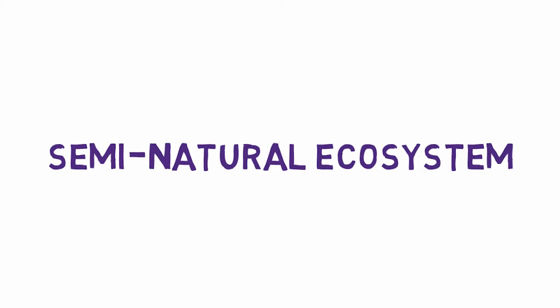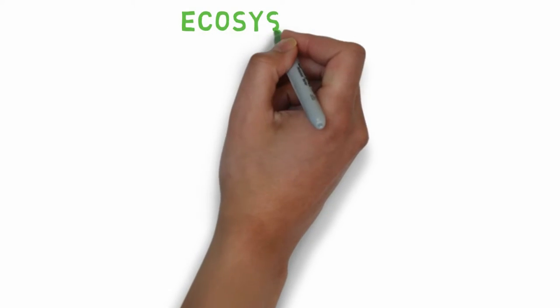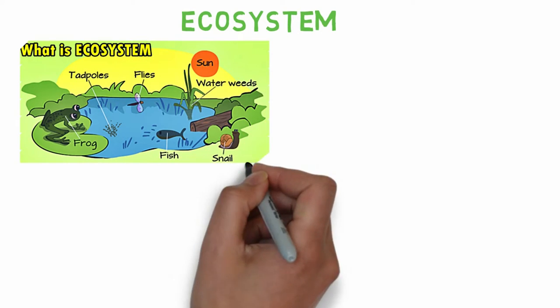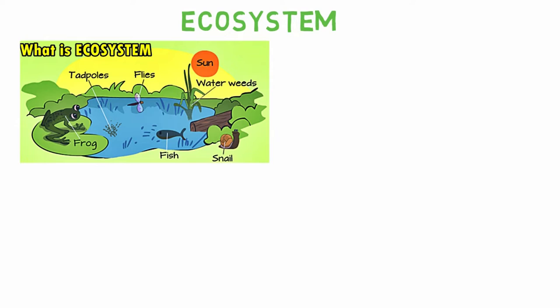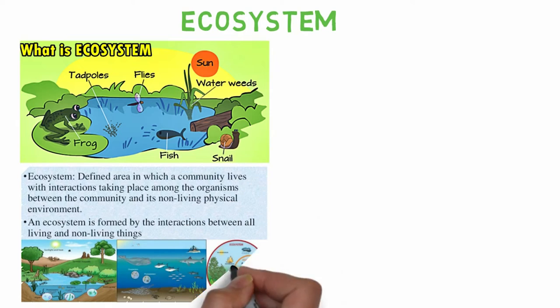Hey guys, today we are going to discuss about semi-natural ecosystems. Before moving on, let us discuss what is an ecosystem. The ecosystem is defined as the total physical, chemical, and biological conditions surrounding the organisms of any area of the earth. An organism's environment is everything altogether — all other organisms